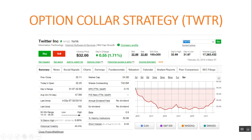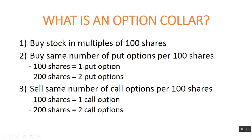So without further ado, before I get into Twitter, let me briefly explain what is an option collar. The first thing you do is you buy a stock in multiples of 100 shares — maybe you get 100 shares, maybe you get 200 shares. Then the second thing you do is you buy the same number of put options per 100 shares, and you sell the same number of call options per 100 shares — so if you buy 200 shares, you sell two call options, and so on.